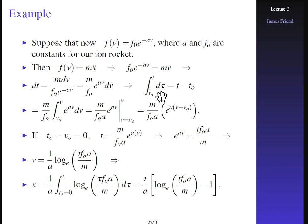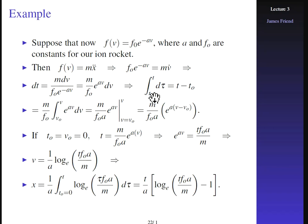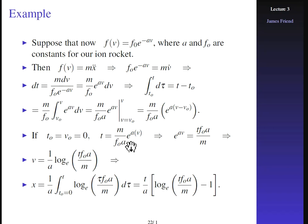Integrating from T₀ to T of dτ gives T minus T₀, which equals M over F₀ times the integral of e^(Av) dV from V₀ to V. Both M and F₀ are constants, so integrating gives M over F₀·A times e^(A·v) evaluated from V₀ to V. With T₀ and V₀ both equal to zero, the time of flight is T = M/(F₀·A) times e^(Av).